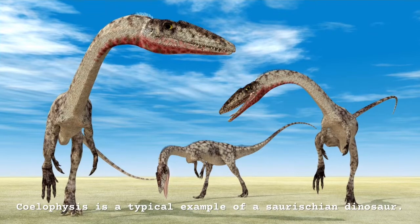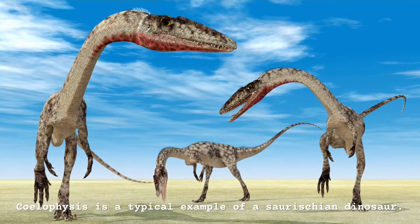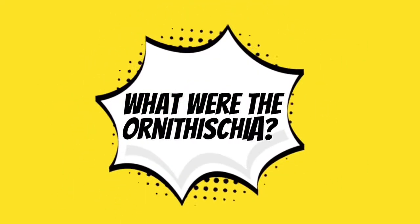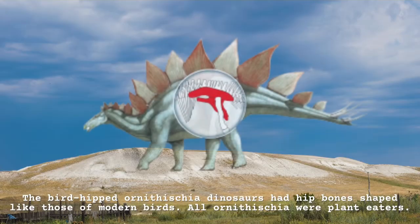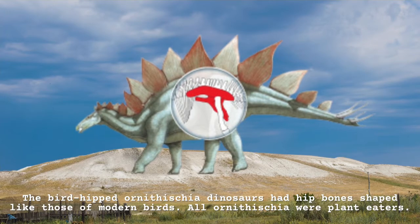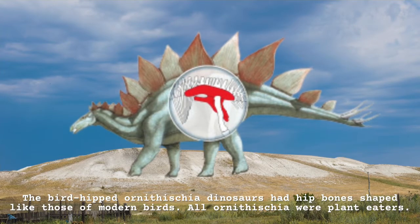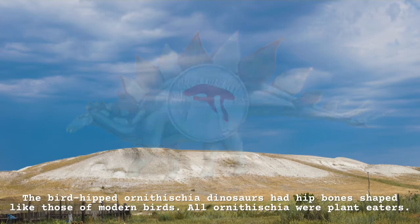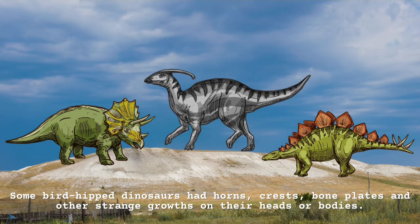Coelophysis is a typical example of a Saurician dinosaur. What were the Ornithischia? The bird-hipped Ornithischia dinosaurs had hip bones shaped like those of modern birds. All Ornithischia were plant eaters. Some bird-hipped dinosaurs had horns, crests, bone plates, and other strange growths on their heads.